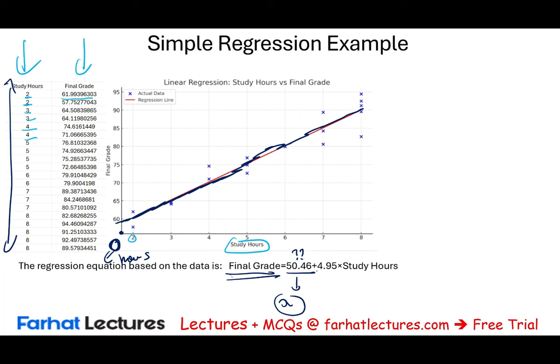Benefits of multiple regression: it allows inclusion of more variables that could affect the outcome, giving better predictions. You can also determine the individual impact of each independent variable on the dependent variable while controlling for others. Limitations include multicollinearity — if independent variables are highly correlated with each other, it can distort coefficients and reduce reliability — and overfitting, where too many predictors make the model fit the specific dataset too well, making it less generalizable.